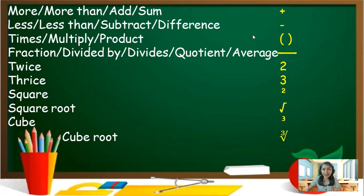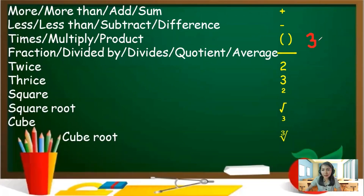Now, we're going to transform English sentences to mathematical sentences. Here are the words you might encounter: 'more,' 'more than,' 'add,' and 'sum' indicate addition — use a plus sign. 'Less,' 'less than,' 'subtract,' or 'difference' indicate subtraction — use minus. 'Times,' 'multiply,' or 'product' indicate multiplication — use parentheses or combine the two, e.g., 3 times Y becomes 3Y. 'Divided by,' 'divides,' 'quotient,' and 'average' indicate division — use the fraction bar.